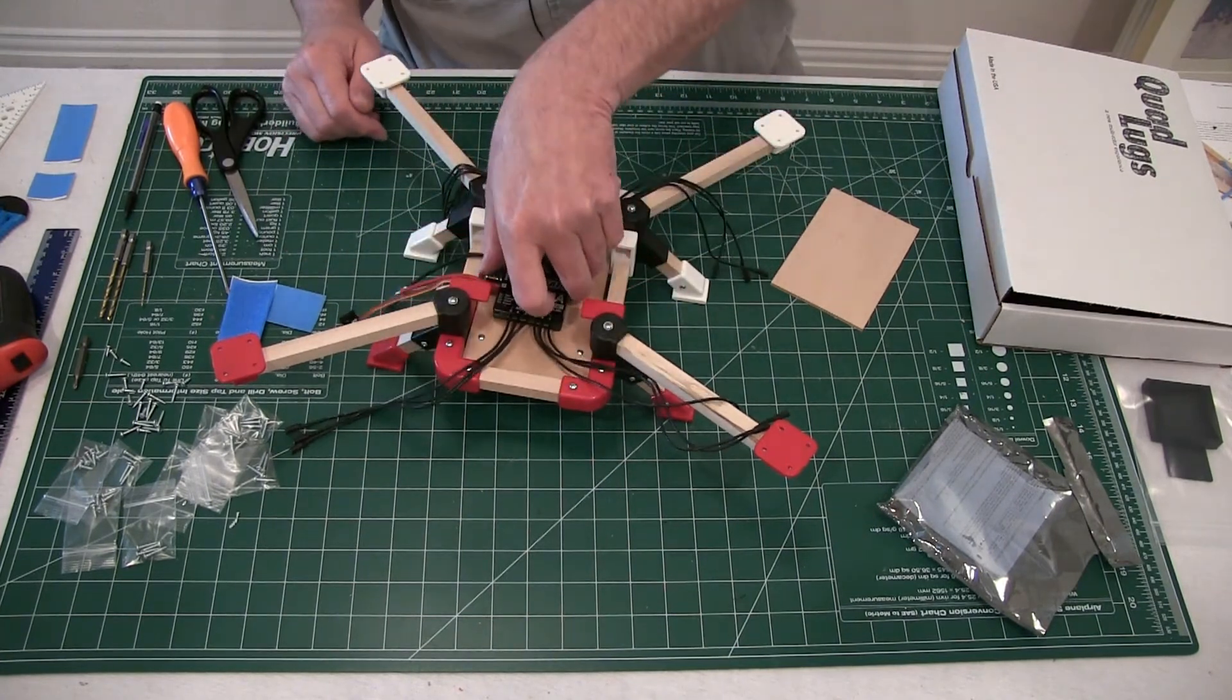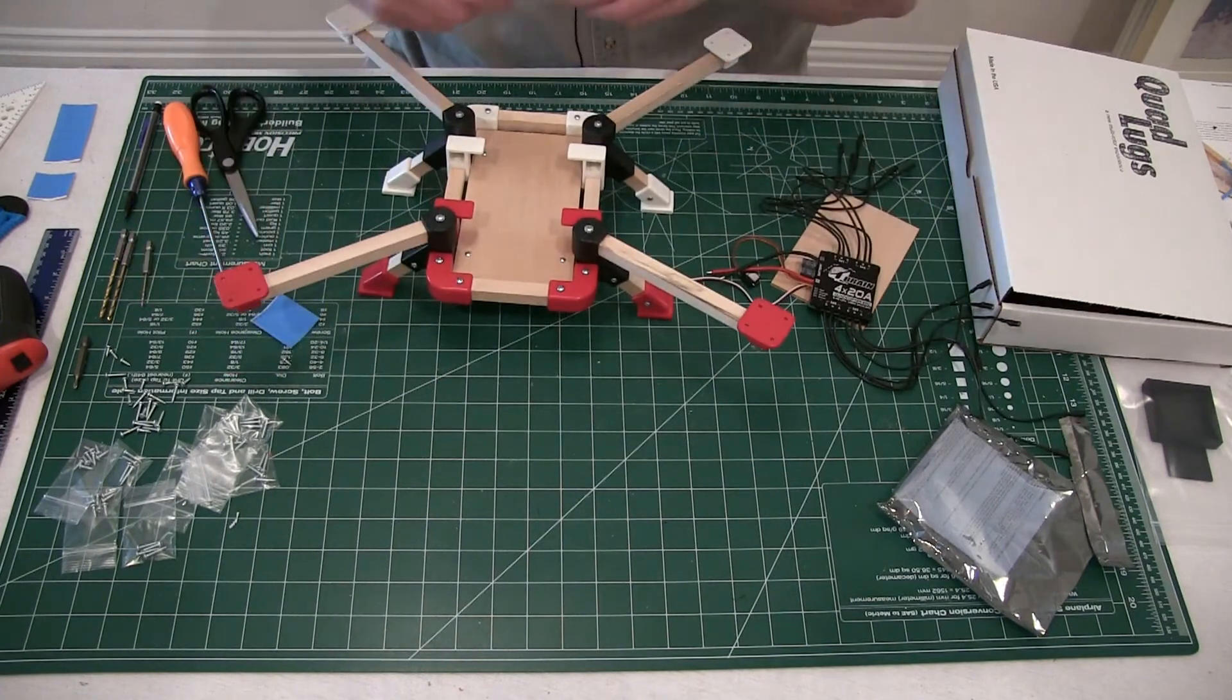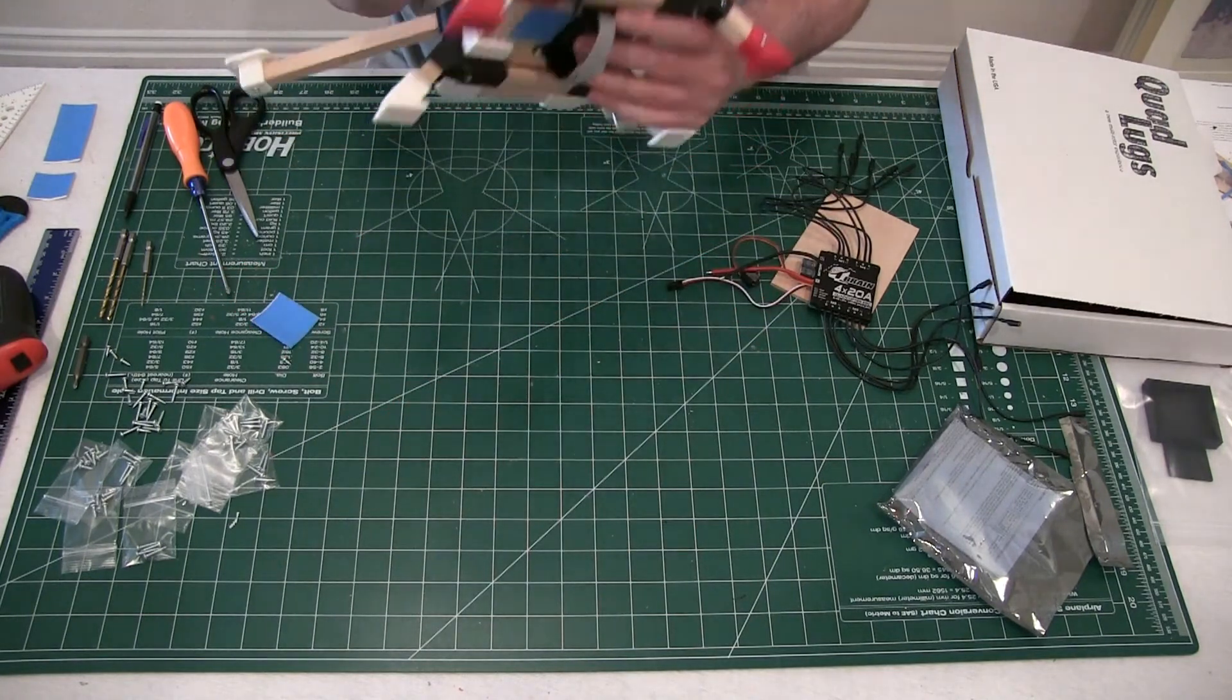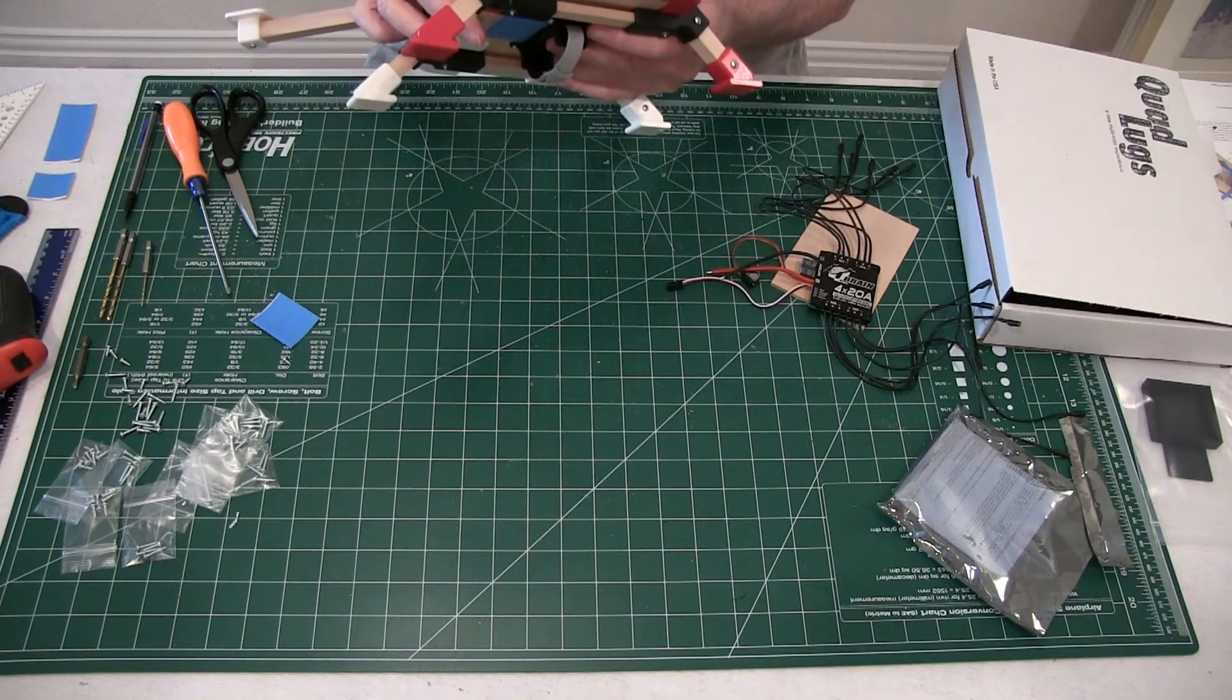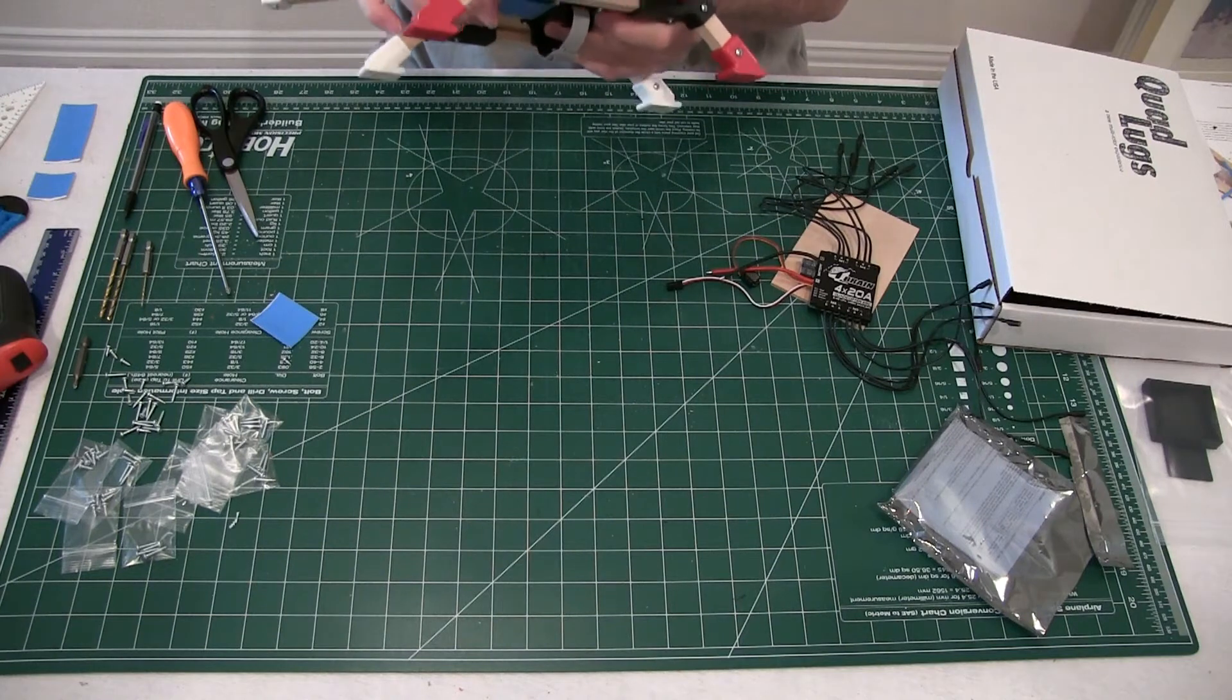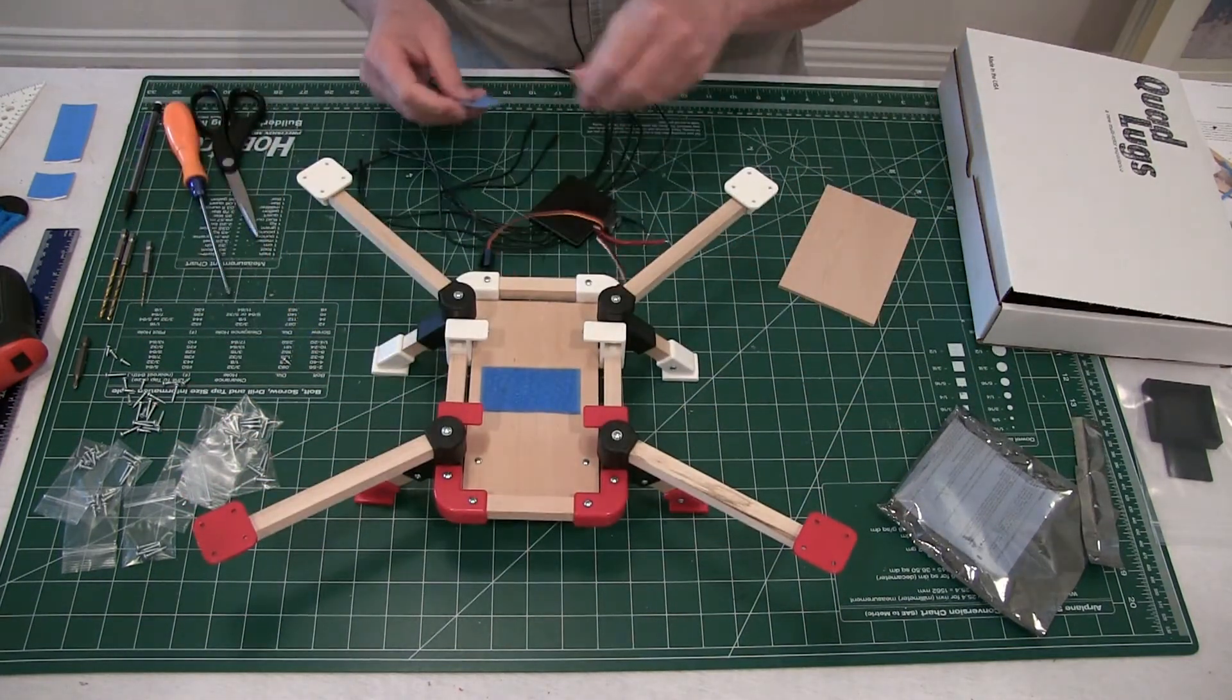I use velcro to put it on. Let's go ahead and do that. I'm going to center this up in here, clean this off a little bit, center it up as best I can, put it down. Now I'll put a piece of velcro on.